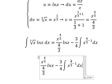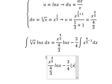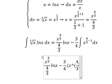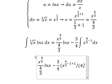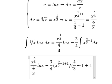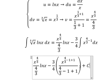Next, the integration of this one: we have x to the power of 4/3 minus 1 plus 1, over 4/3 minus 1 plus 1. And we add the constant C.